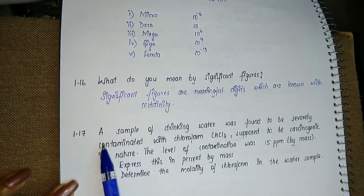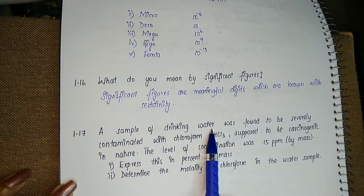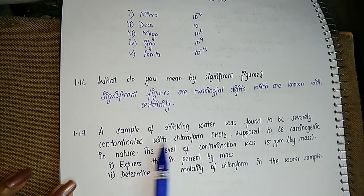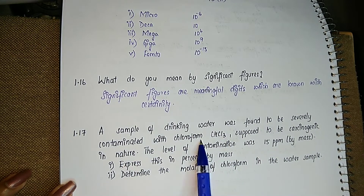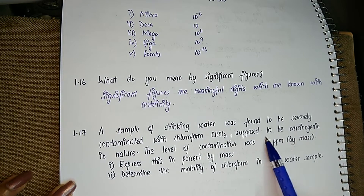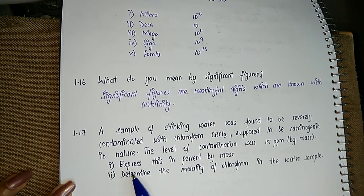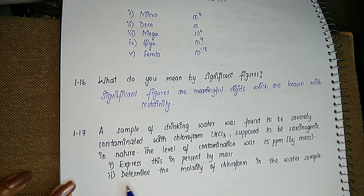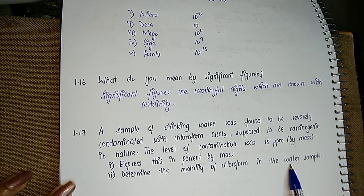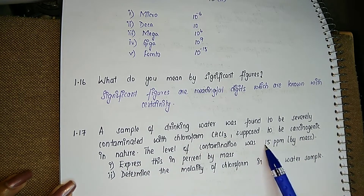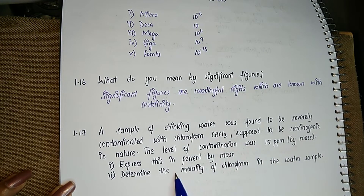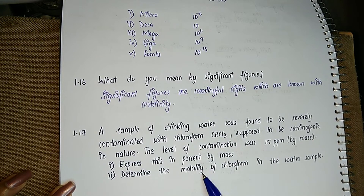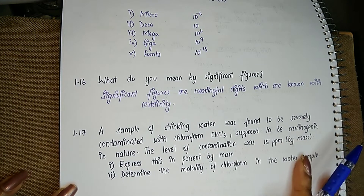Moving on to question 1.17: a sample of drinking water was found to be severely contaminated with chloroform, which is supposed to be carcinogenic in nature. The level of contamination was 15 ppm by mass. The first part asks us to express this in percent by mass, and the second part asks us to determine the molality of chloroform in the water sample.